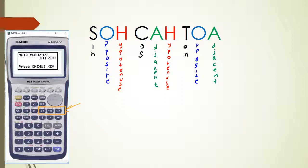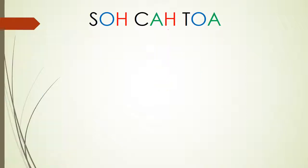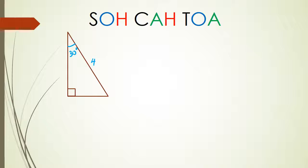Okay, so SOHCAHTOA — that's something you need to remember. S stands for sine, C stands for cos, T stands for tan, and then you've got your opposite, hypotenuse, and adjacent sides to work with. Let's do a few examples so you can get the hang of how to actually use this. In this first question I've got an angle of 30 degrees, a side equal to 4, and an unknown side x.